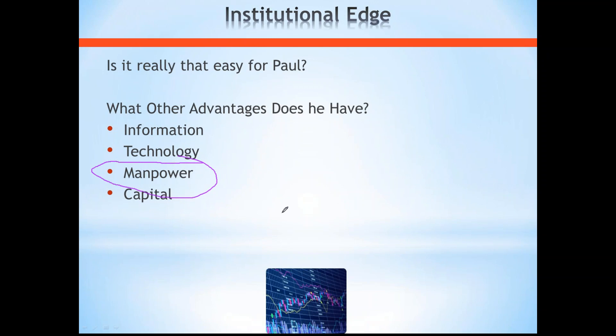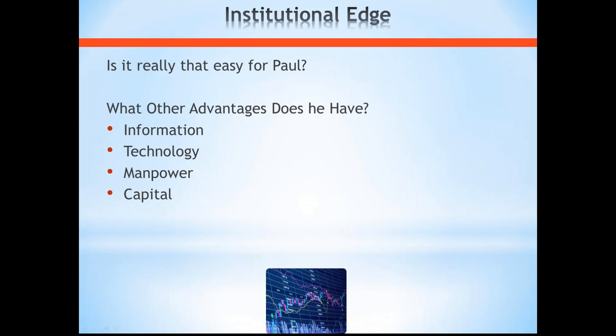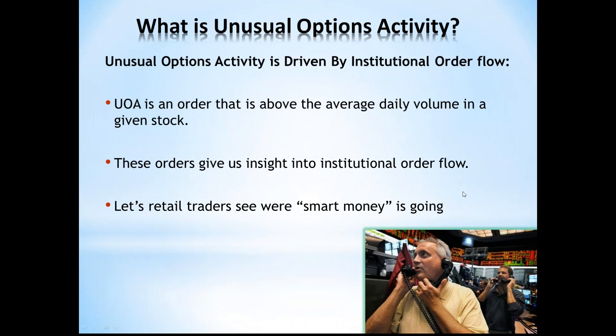Institutions have massive teams of people able to go over all of this information, analyze it, and put it into a plan that spits out a strategy they want to trade. What we want to talk about is what happens after all of this analysis and work is done — and that's where we get to unusual options activity. Unusual options activity is driven by institutional order flow. An unusual options activity order is any order in the equity options market that is above the average daily volume in a given stock.